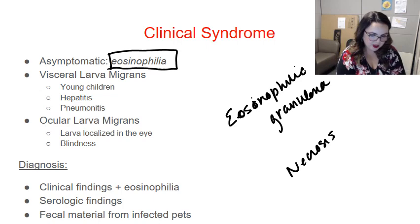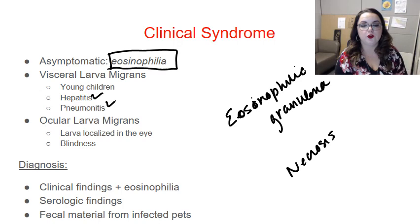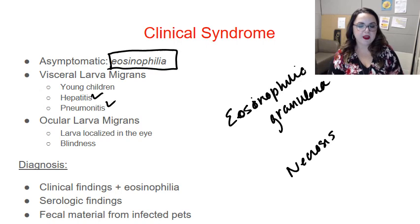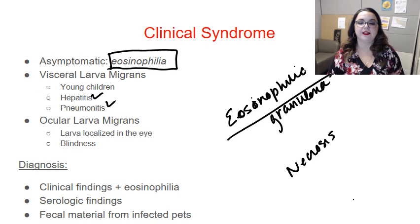Visceral larvae migrans most often occurs in very young children putting things in their mouths. The result is typically hepatitis or pneumonitis because the larvae migrate through the liver and lungs. In heavy infection you can see fever, anorexia, malaise, irritability, and hepatomegaly from liver involvement, respiratory symptoms from lung involvement, and mass eosinophil activation leading to things like urticaria with pruritic lesions and significant eosinophilia.